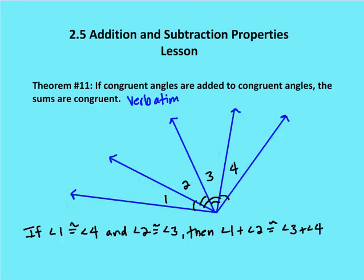All right, theorem number 11. If congruent angles are added to congruent angles, then their sums are congruent. So I have angle two and angle three that are congruent, and I also have angle four which is congruent to angle one. So that means if I add one and two together, it will be equal to the sum of three and four. If angle two and three are congruent, and one and four are congruent, then the sums of the two congruent sets of angles are congruent as well.